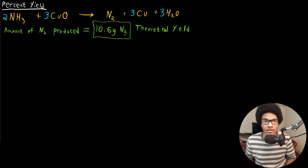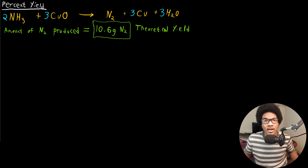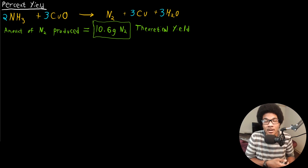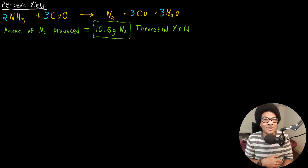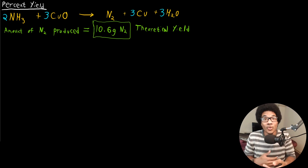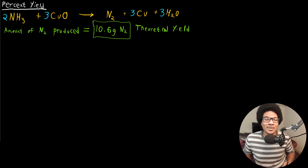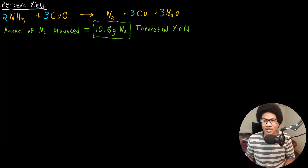There are certain things that can happen in chemistry that prevent you from getting this maximum amount. There can be side reactions — for example, if you're doing a reaction out in ambient air, a reactant might react with oxygen and form byproducts. Maybe your reactant is contaminated, so you don't really have the amount you think you do. There are plenty of real-world complications that can prevent you from reaching the stoichiometry-calculated number.